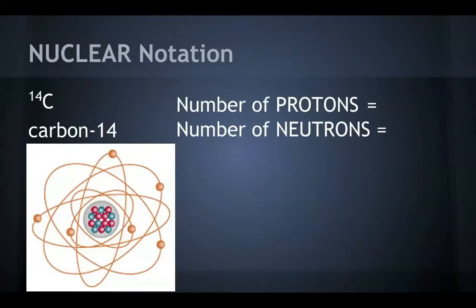Alright, here we have an example problem of nuclear notation involving carbon-14. To find the number of protons, you're going to look on the periodic table and you'll see that it's 6, for its atomic number, so that means its number of protons is 6. And its mass number is 14, so you take away the 6 from the 14 and you would have 8, because the protons plus neutrons should equal the mass number of 14.